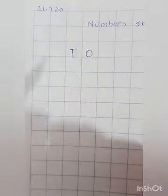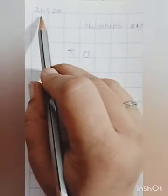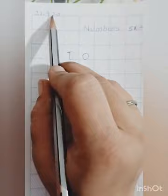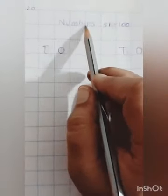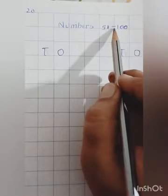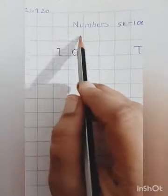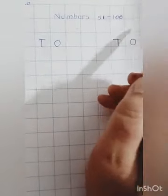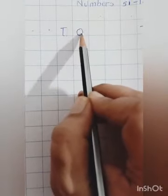On the next page, first thing you will do in the left side corner, you will write today's date that is 21.9.20 and then you will write the heading that is numbers 51 to 100. Then you will leave one line. It means you are going to put the dots in the next line. Then you will write T and O, T for tens, O for ones.